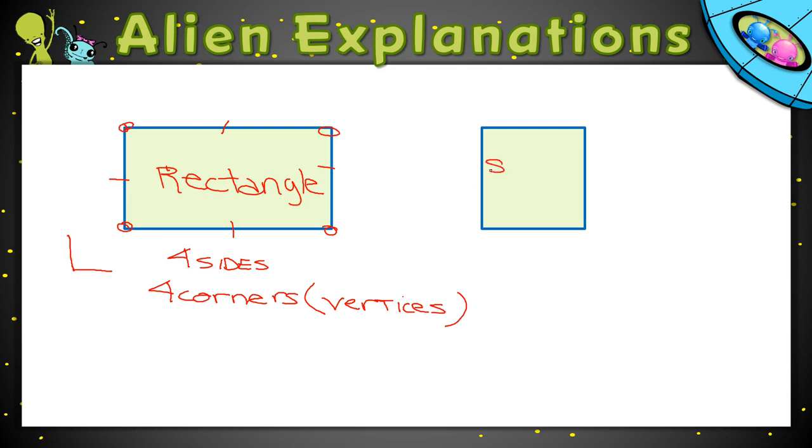So this is a square. What makes a square different from a rectangle? Because we see they have a lot in common. They both have four sides. They both have four L-shaped corners. What else?